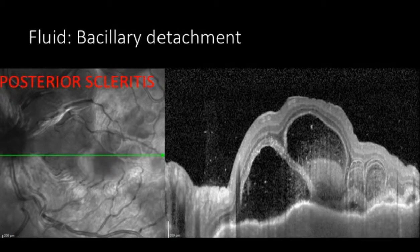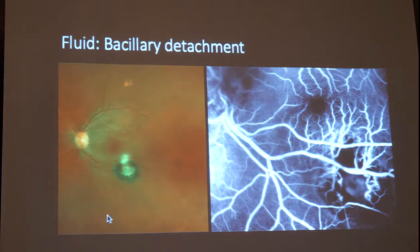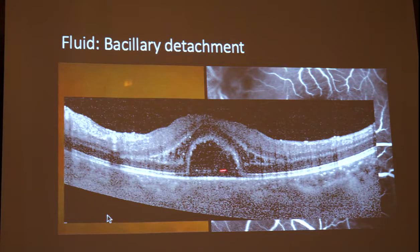Bacillary detachment is a very peculiar form of retinal inflammation, but it is highly aspecific, meaning it may be associated with different forms of ocular inflammation. This is a case of posterior scleritis with multiple pockets of bacillary detachment over and temporal to the fovea. It can also be associated with infectious disease: this case of focal retinitis was associated with marked hypoperfusion and arterial vasculitis involvement close to the macula, and the OCT revealed splitting of the ellipsoid zone with fluid accumulating between the ellipsoid zone and the external limiting membrane.